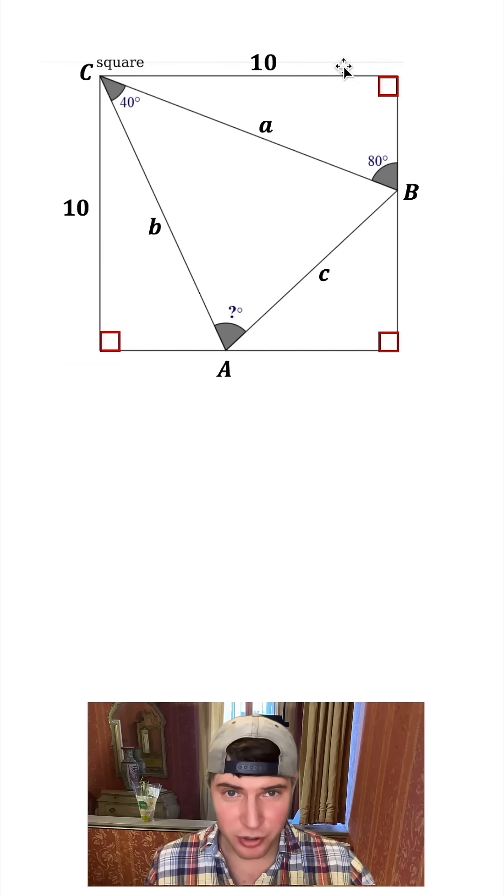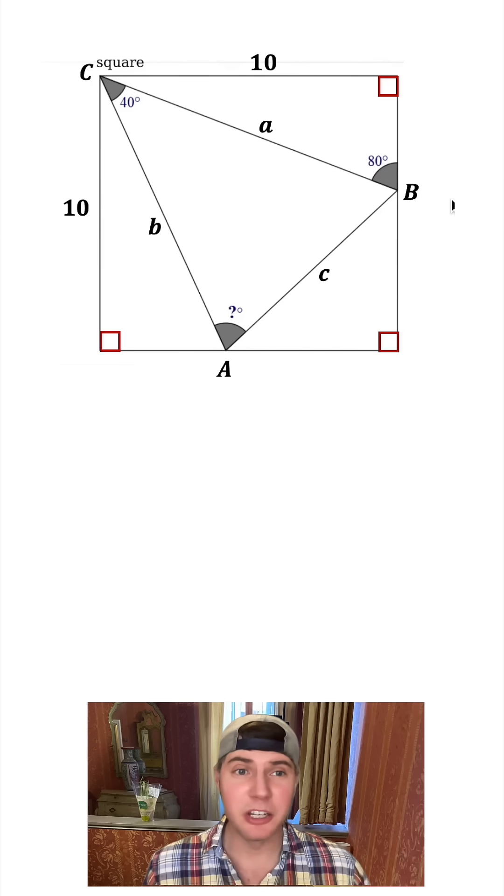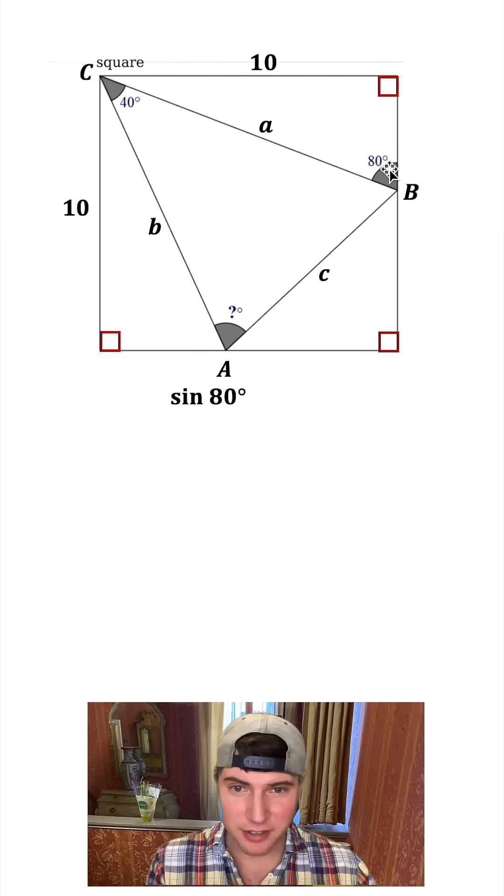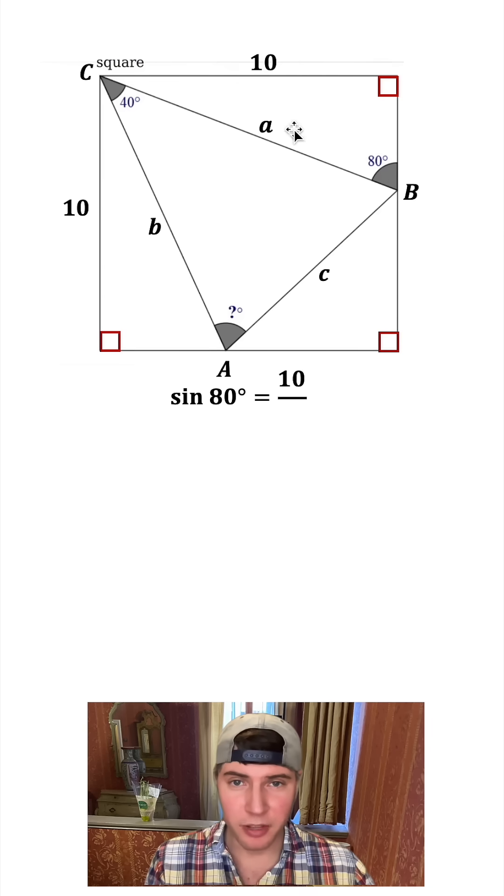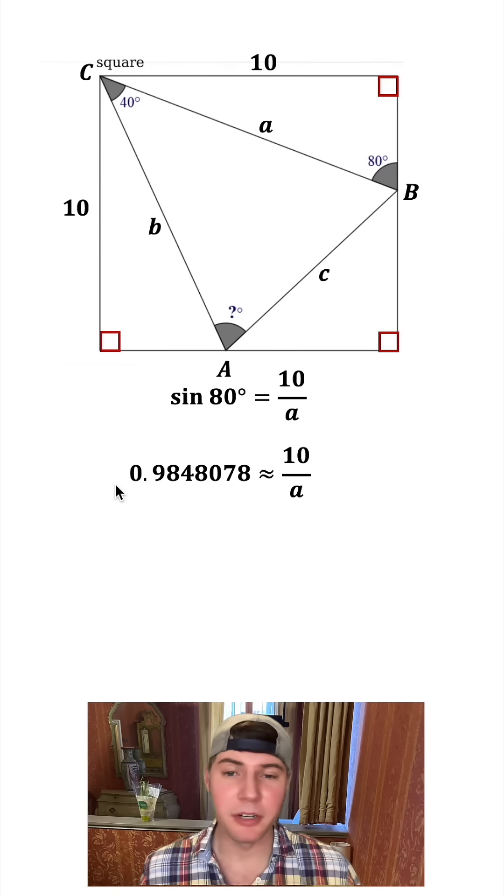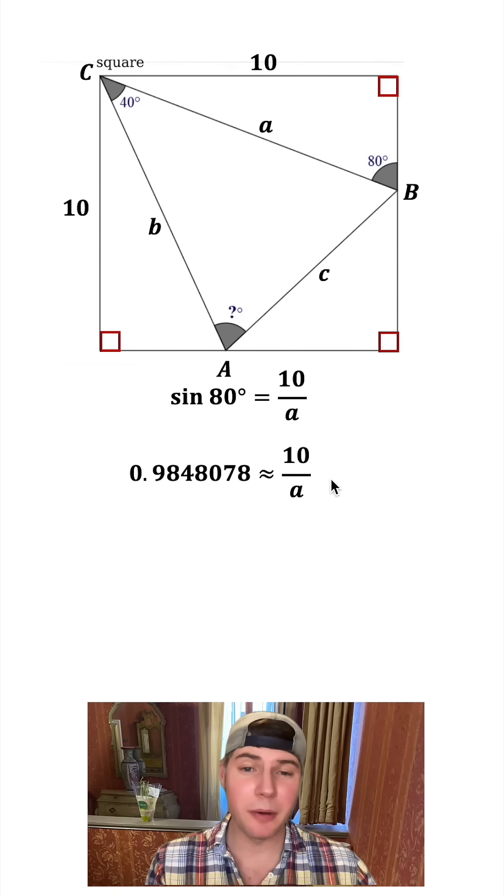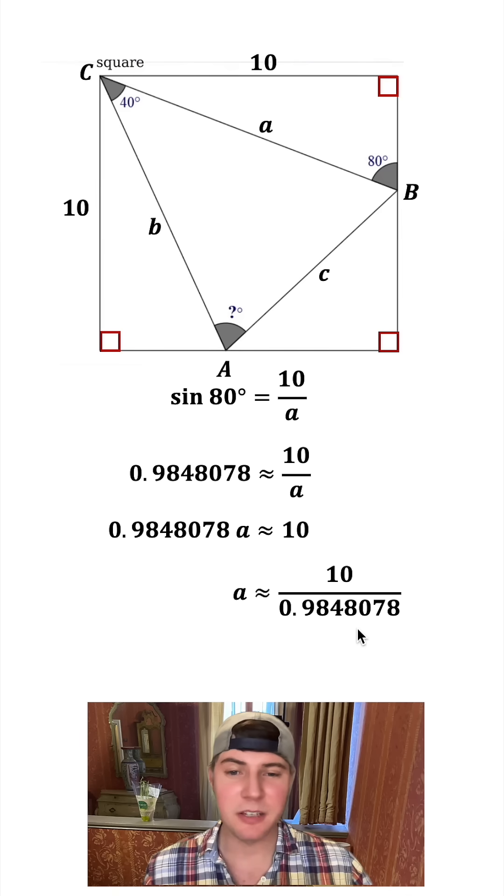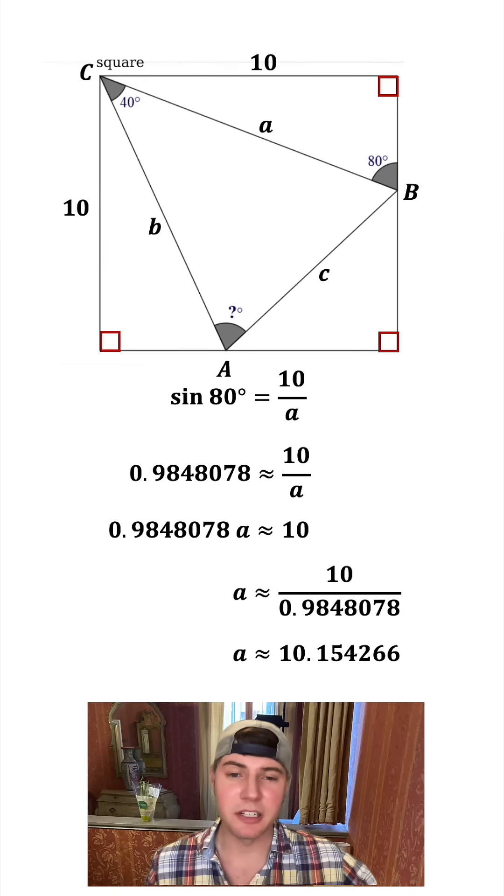So now let's look at this triangle up here. This is a right triangle, so we can use SOHCAHTOA. So I'm going to do sine of 80 degrees is equal to the opposite 10 over the hypotenuse A. And then if I take the sine of 80 degrees, I get approximately 0.9848078. And then I can multiply both sides by A and then divide by that decimal and I get a value of A. It's approximately 10.15.